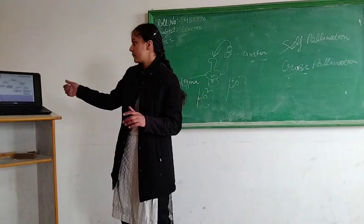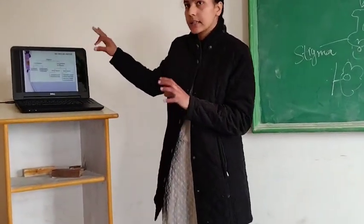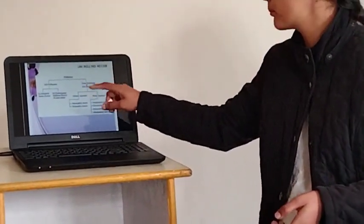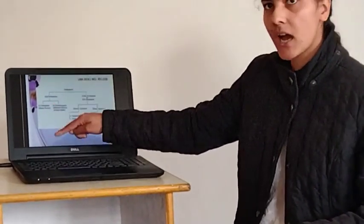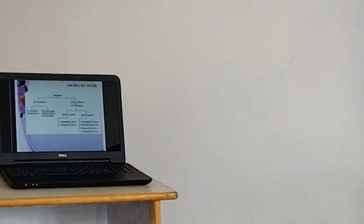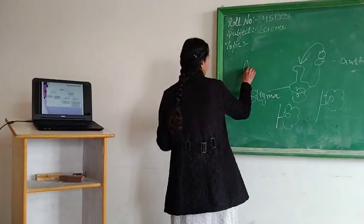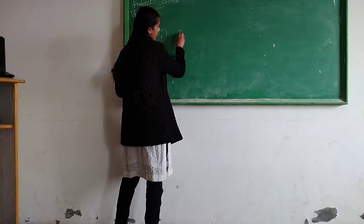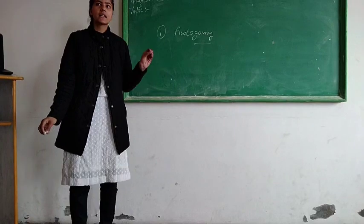Now let us understand a table that will help you understand better. Pollination has two types: self-pollination and cross-pollination. Self-pollination has two subtypes: autogamy and geitonogamy. Autogamy is similar to self-pollination — it is when the pollen grains from the anther of a flower transfer to the stigma of the same flower. This is called autogamy.